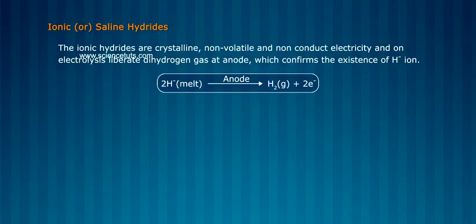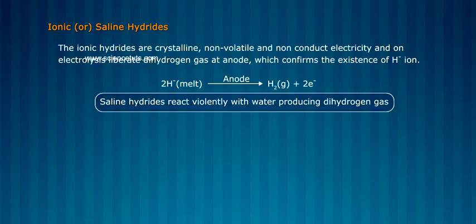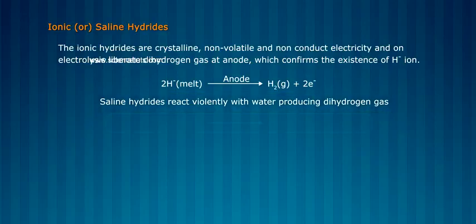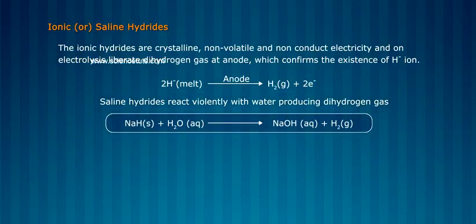In the melt state at the anode: H₂ gas + 2e⁻. Saline hydrides react violently with water, producing dihydrogen gas: NaH + H₂O (aq) → NaOH (aq) + H₂ (g).